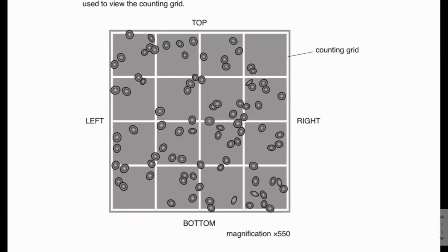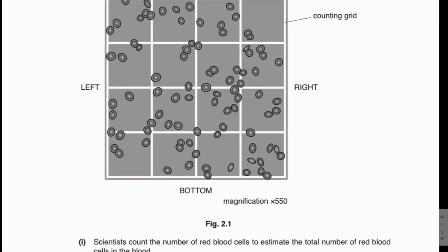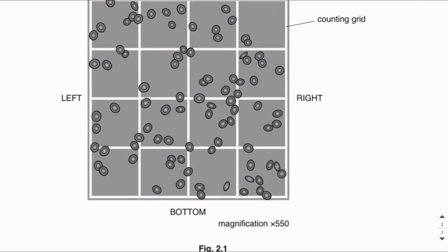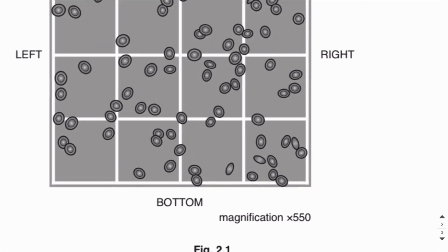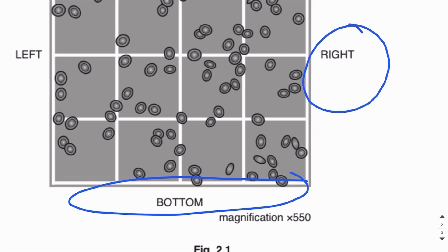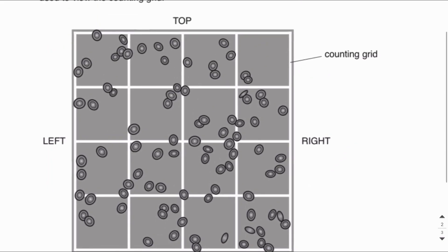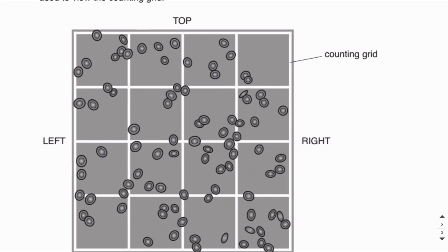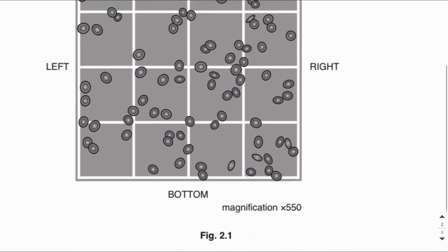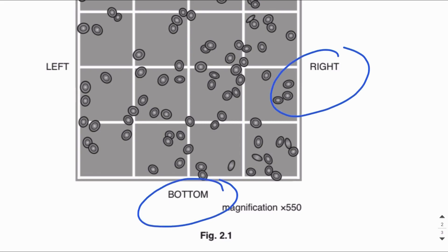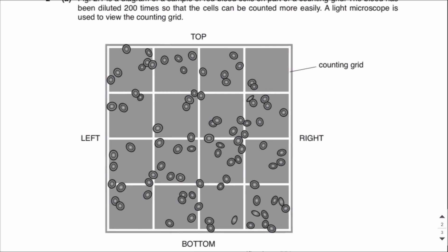How do we count the cells when using the hemocytometer? The rule is that you count all the cells that you see, except for cells which are touching the bottom of the grid and the right of the grid. You do count the cells which are touching the top of the grid and the left of the grid. You can count all cells not touching the edges, cells touching the top, and cells touching the left — but you cannot count cells touching the bottom and right side of the grid.